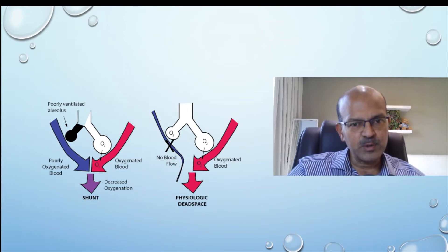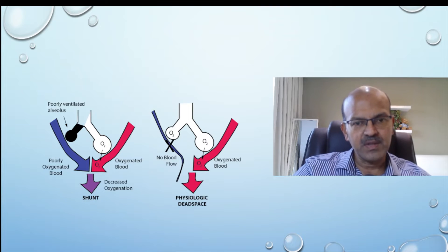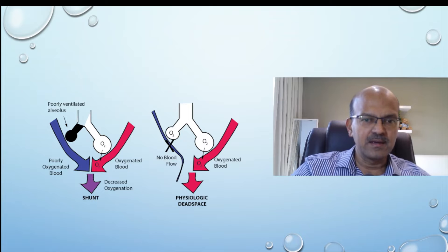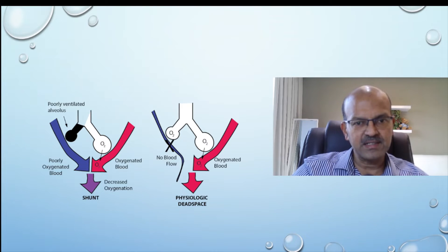Remember that different parts of the lung may have different features. The dependent portion of the lung may have higher perfusion with lower ventilation, while the upper lobe of the lung may have better ventilation compared to perfusion.